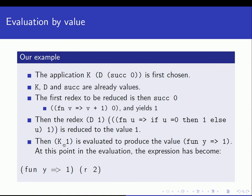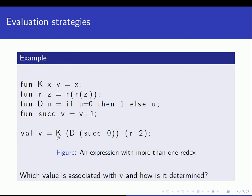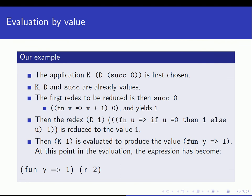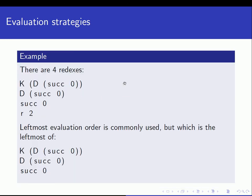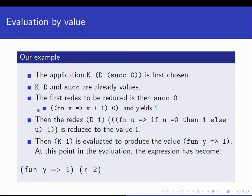In our example, the leftmost expression is chosen first - that's k d successor of zero. K, d, and successor are already values because these are just names for functions. So the first redex to be reduced is successor of zero, because we have a function value, successor, and then we have a value argument, zero.